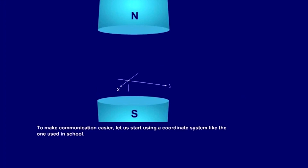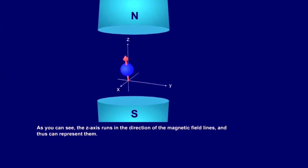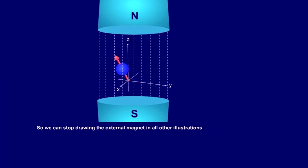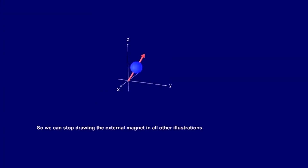To make communication easier, let's start using a coordinate system like the one used in school. As you can see, the z-axis runs in the direction of the magnetic field lines and thus can represent them. So we can stop drawing the external magnet in all other illustrations. From here on, we will also illustrate the protons as vectors, as little arrows.